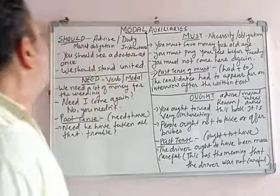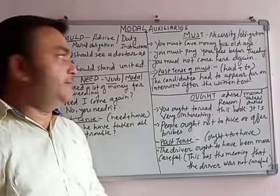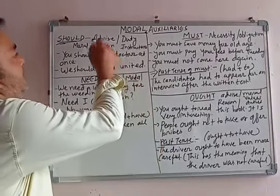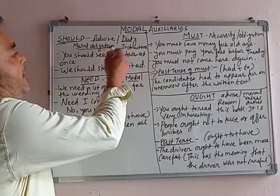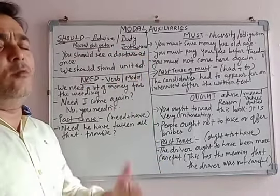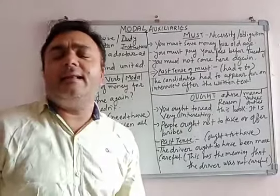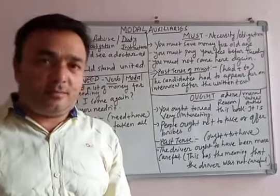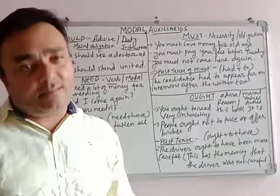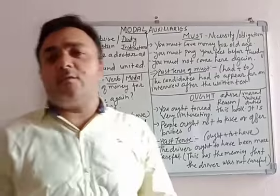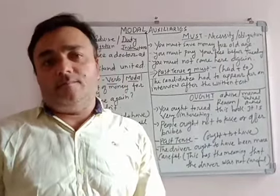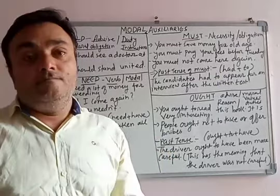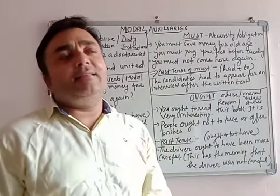Number one is 'should.' Should is used for advice, for duty, for moral obligation, and for instruction. These rules are important — just understand that advice is there. When giving advice you might say: you would do this, you could do this, you should do this. Once you practice these in your daily life, obviously it will come naturally. You yourself will understand whether to use would, should, or could.